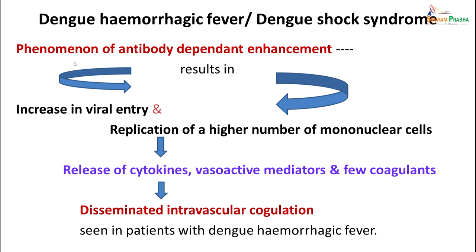The phenomenon of antibody-dependent enhancement results in increased viral entry and replication in a higher number of mononuclear cells, which leads to release of cytokines, vasoactive mediators, and procoagulants. This can lead to disseminated intravascular coagulation (DIC) seen in patients with dengue hemorrhagic fever, and can further lead to fatality in many patients.